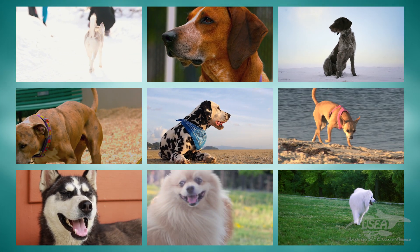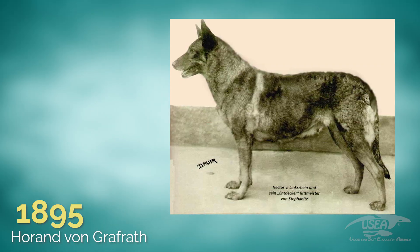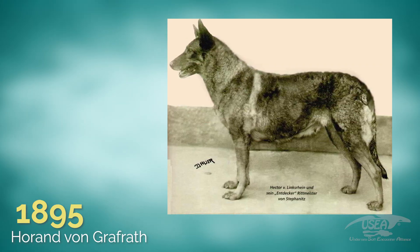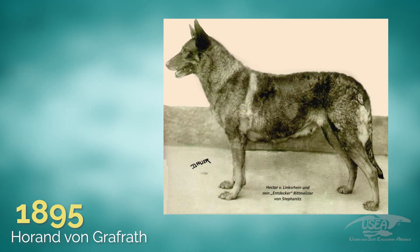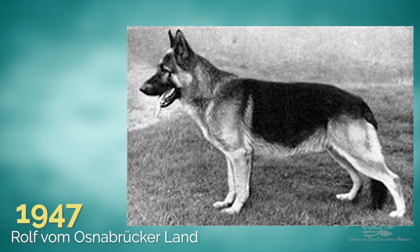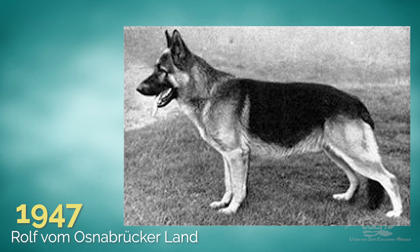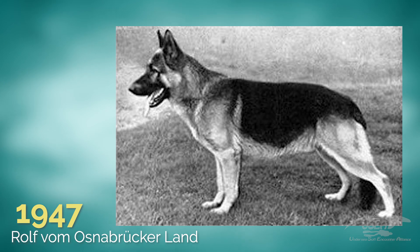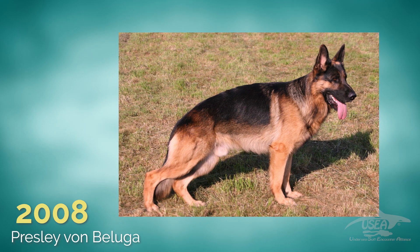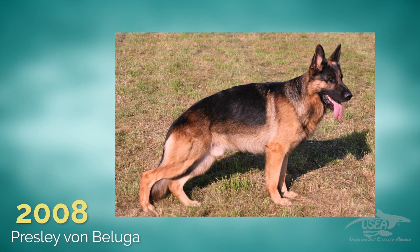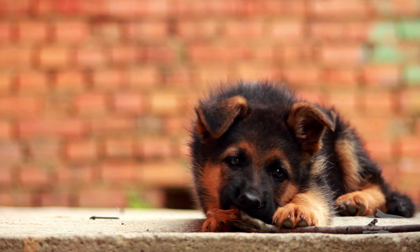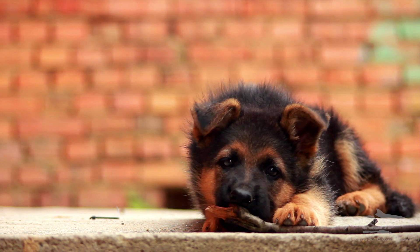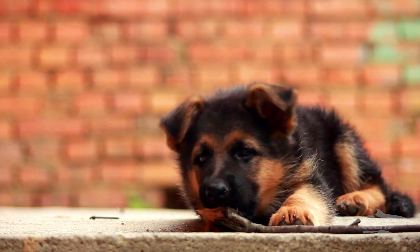To understand what selection is, and also the artificial selection by breeding, here is Horand von Grafrath, who was the first German Shepherd registered in the original studbook — it was in 1895. This one is called Ralph von Osnabrück. 50 years of breeding and selection completely changed the body of this dog. And now the current German Shepherd looks like this. So in a little more than 100 years, we can completely change the shape of an animal just by breeding, by using selection.